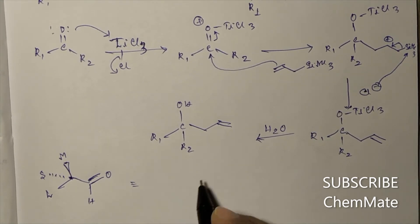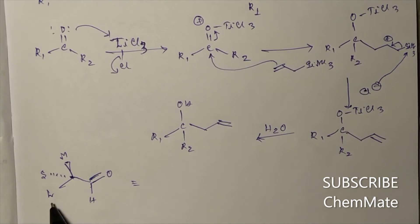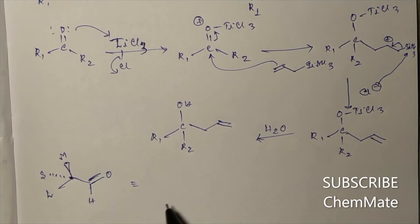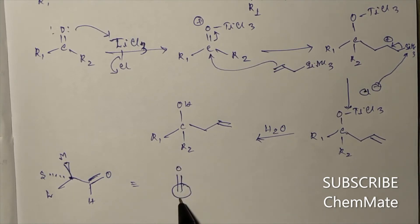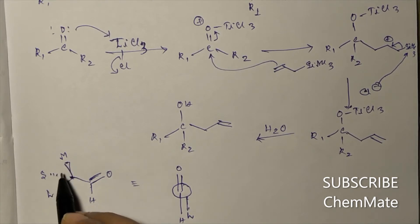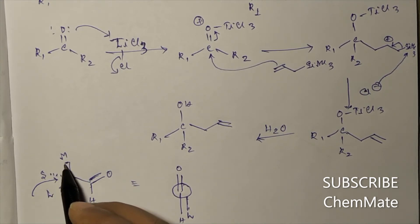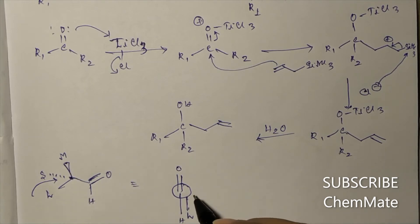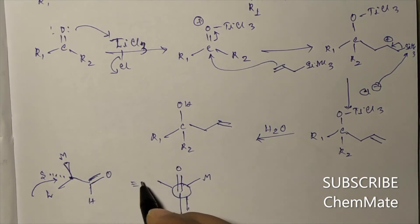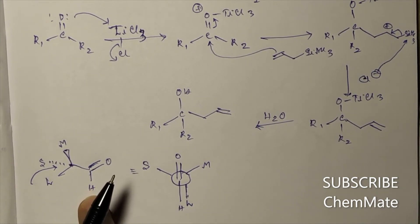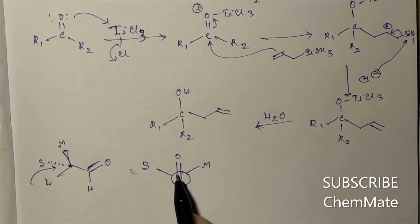From this preferred conformation the addition reaction takes place, in which the large group will be anti-periplanar to the carbonyl group. For such a system, the most stable conformation will be such that, viewing from the front, the large group is in the back anti-periplanar to carbonyl, the medium group is on the right, and the small group is on the left. This is the stable conformation from which the addition reaction takes place.